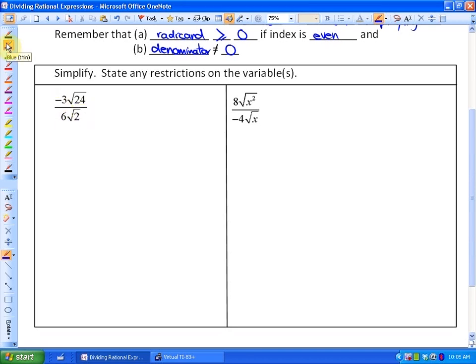First I'm going to divide first and then simplify. If I divide the coefficients here, so negative 3 divided by 6, we'll simplify to negative 1 half. And then if I divide the radicands, this would be the square root of 24 divided by the square root of 2.